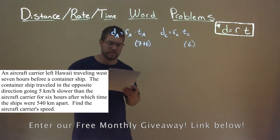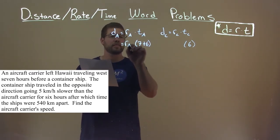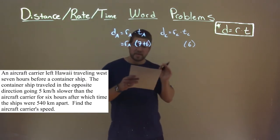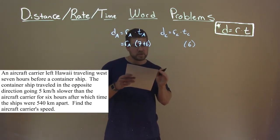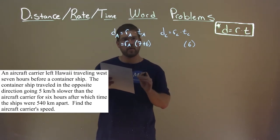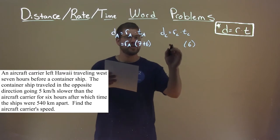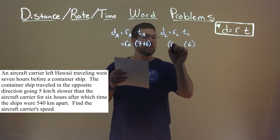Okay, what about their rates? Well, we don't know the rate of the aircraft carrier. But we do know, they tell us this key thing, that the container ship was traveling the opposite direction five kilometers per hour slower than the aircraft carrier. So the rate of the container ship is whatever the rate of the aircraft carrier is minus five.